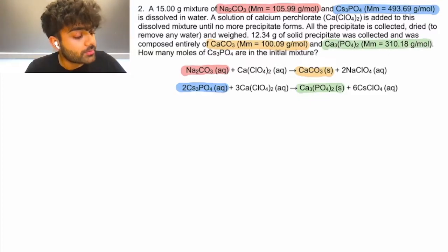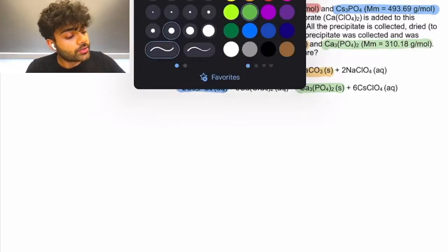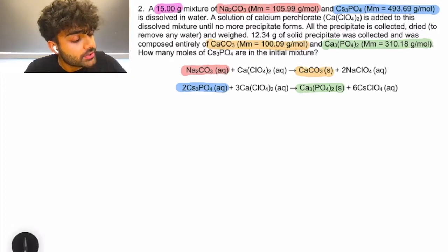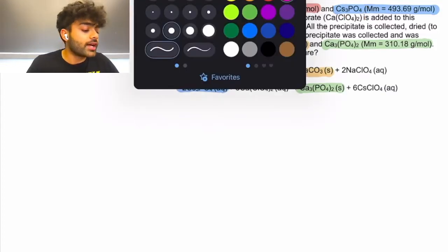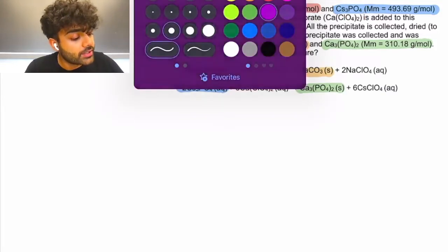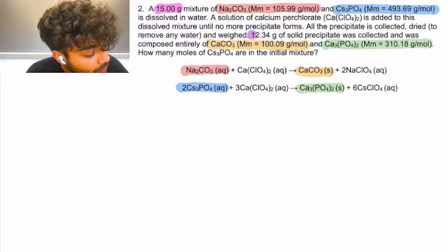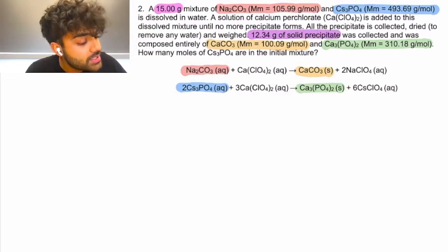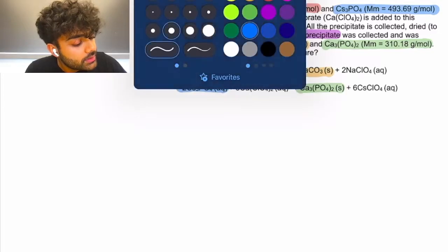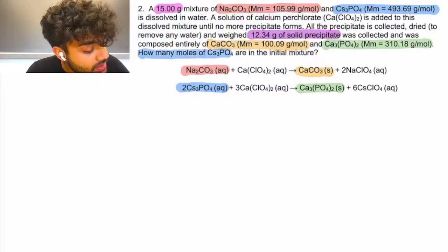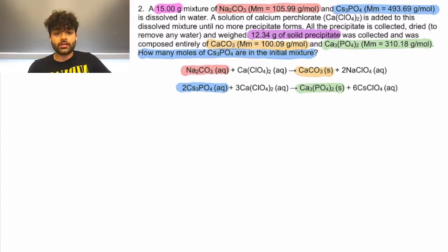Now we are told that we have a 15 gram mixture comprised of Na2CO3 and CS3PO4, and that when we react that mixture with our calcium perchlorate, what we get is a 12.34 gram solid precipitate comprised of CaCO3 and Ca3PO4. And now the question wants us to determine the number of moles of CS3PO4 in the initial mixture. Like I said, there are a lot of words, but let's try to boil this down to some equations.